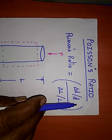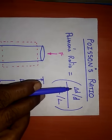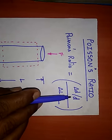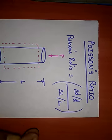Poisson's ratio is equal to change in diameter to the original diameter divided by change in length to the original length.